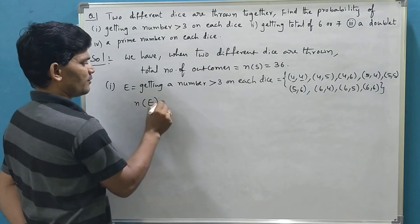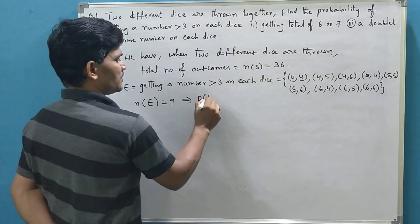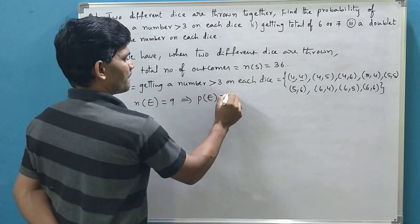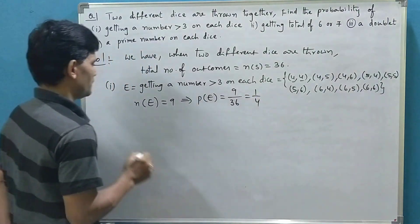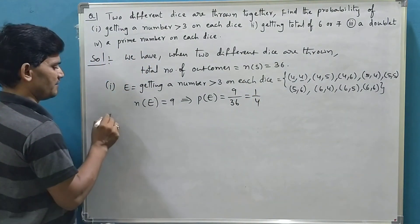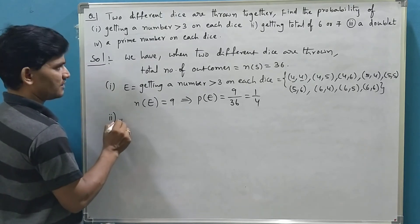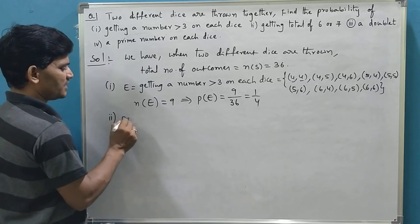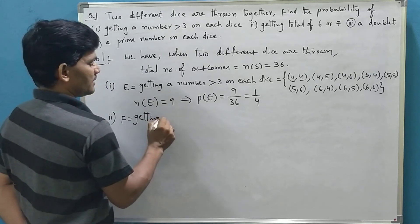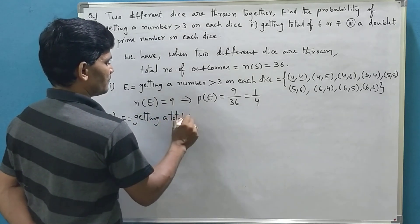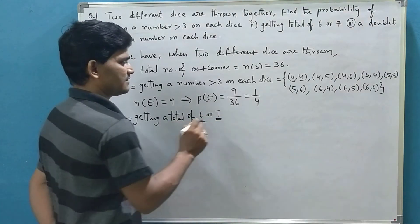The number of favorable outcomes for this event is 9. Now let us see the second event, that is getting a total of 6 or 7. Let us name the event F — getting a total of 6 or 7.